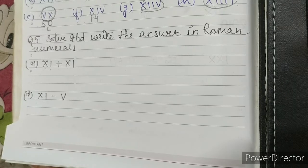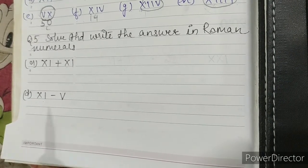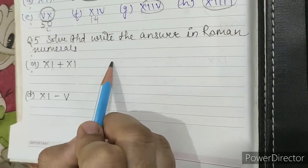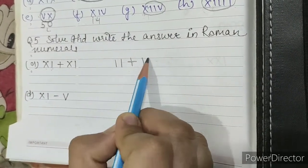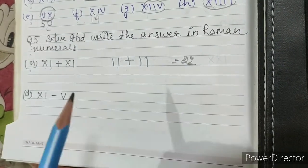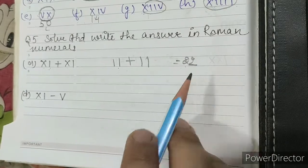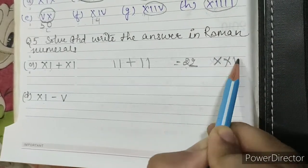Question number 5. Solve and write the answer in Roman numerals. Part A: XI. XI means 11 plus XI, 11. So 11 plus 11 is 22. Now we will write 22 in Roman numbers as XXII.